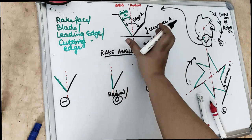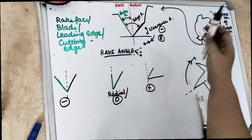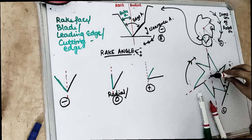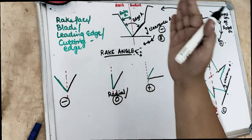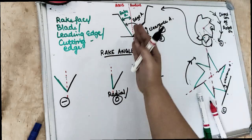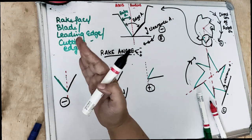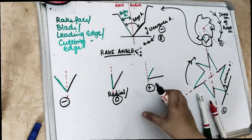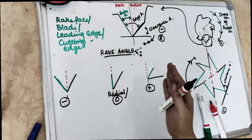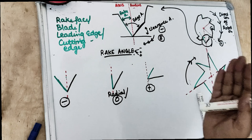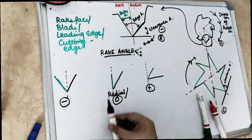The negative rake angle is one where the rake face touches the tooth before the radius — the blade or leading edge is ahead of the radius. This is the negative rake angle. The positive rake angle is when the radius comes first and then after the radius we have the cutting edge or rake face. The zero rake angle is when the radius and the rake face coincide with each other.